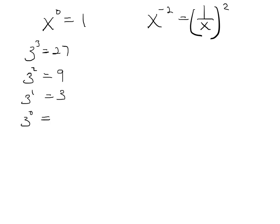So, to go backwards, we could say 27 divided by 3 gave us 9. 9 divided by 3 gave us 3. If we continue this pattern, 3 divided by 3 is going to give us 1. So, that shows us that 3 to the 0 power equals 1.